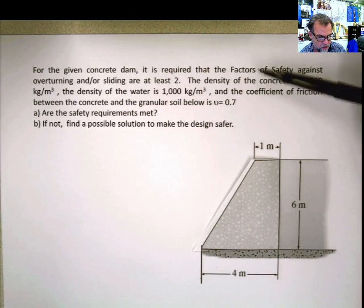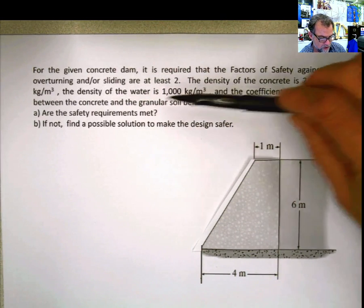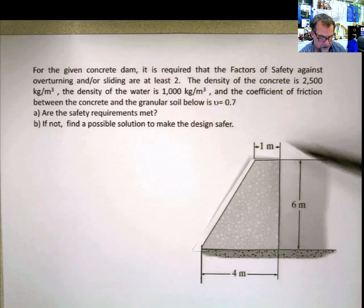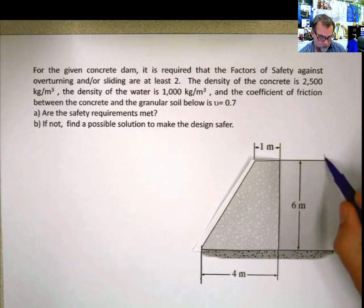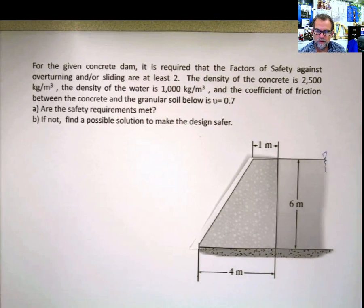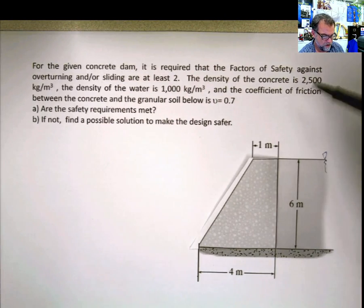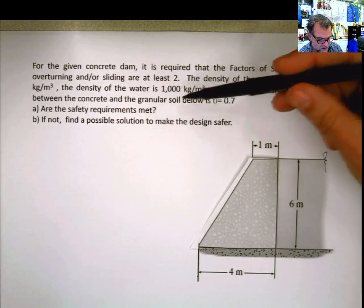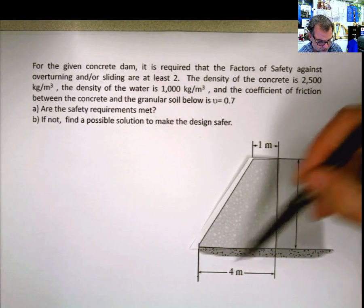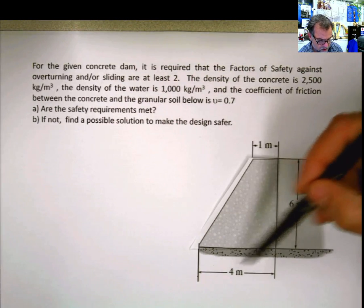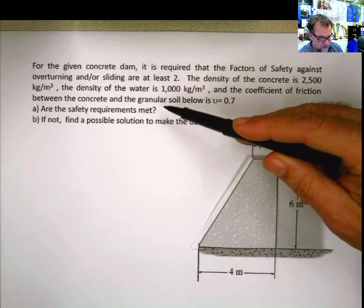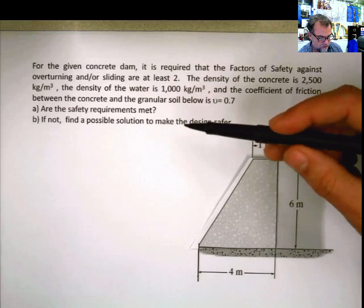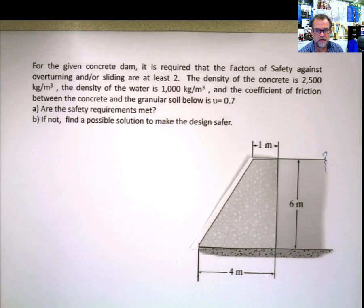The density of the concrete is 2,500 kilograms per cubic meter. And the density of the water is 1,000 kilograms per cubic meter. The coefficient of friction between the concrete and the granular soil below is mu equals 0.7. Are the safety requirements met? If not, find a possible solution to make the design safer.